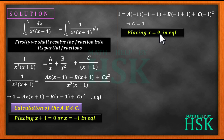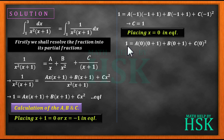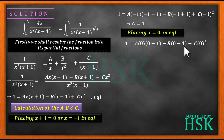Next, I place x equals 0 into equation 1. I get 1 equals A·(0)·(1) plus B·(0+1) plus C·(0) squared. The first and third terms become 0, leaving 1 equals B. So the value of B is 1.